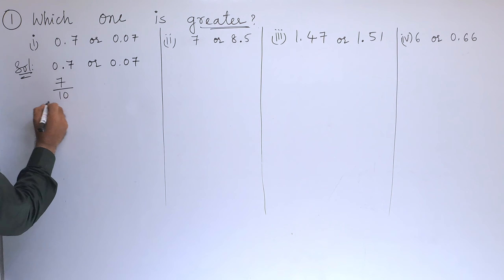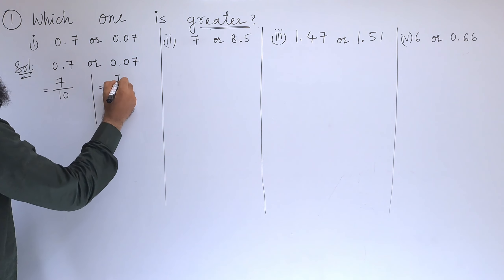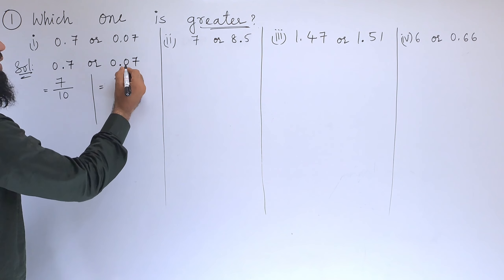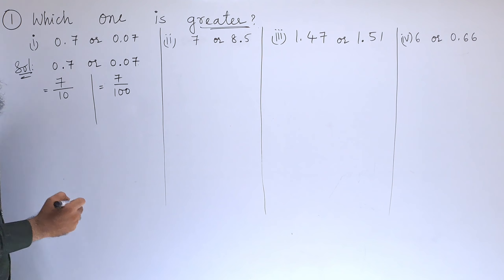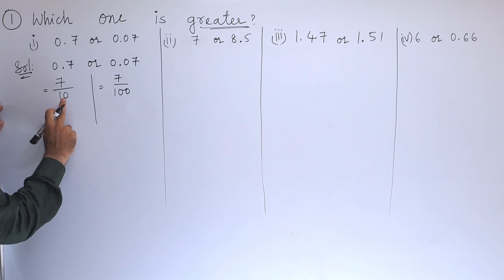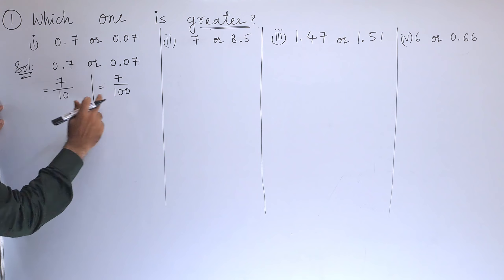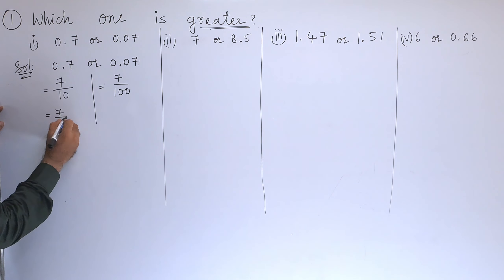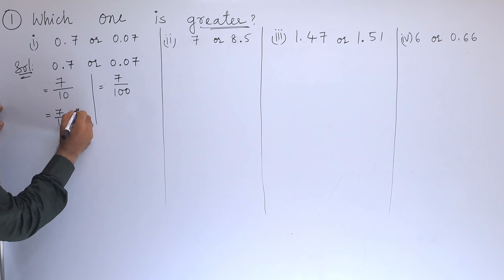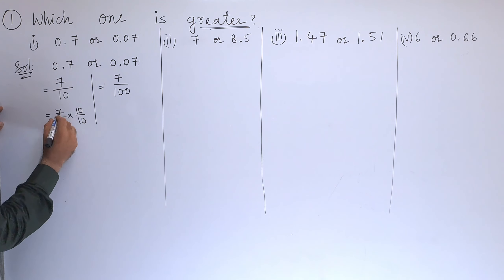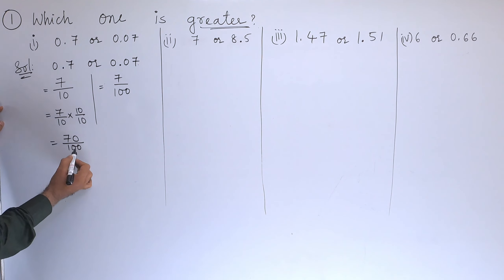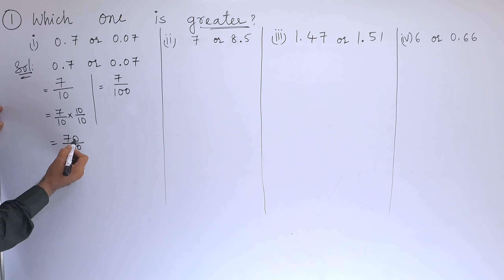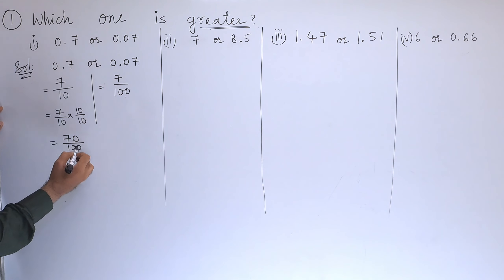After decimal there are two digits so we will write two zeros, that is 100. Next, to make this denominator equal to that, we will multiply this with 10. 10 into 10 gives seven tens, that is 70 over 100.